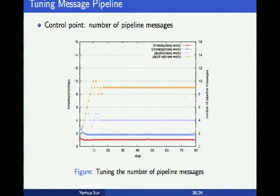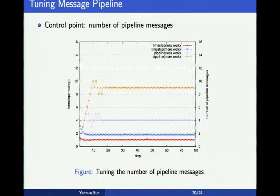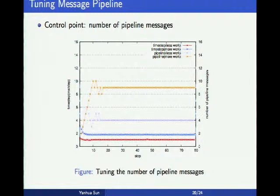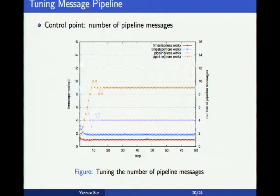From that point, we reverse the search direction and decrease the control point value. We go back and forth three times, then pick up the value with the best configuration and use it for the rest of the run. We observe the performance becomes stable and is much better than the initial performance.